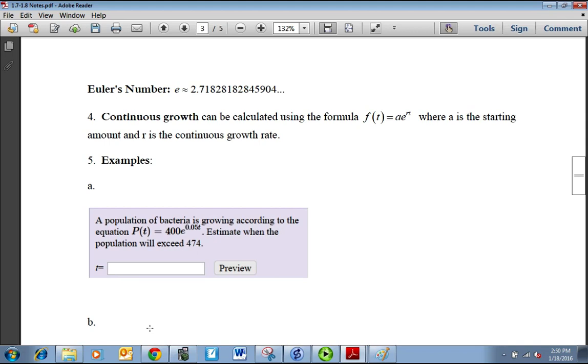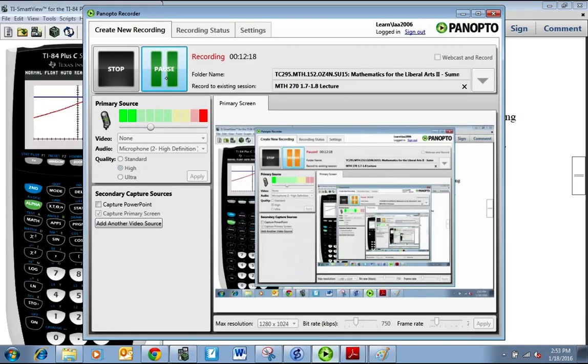In 5A, this problem says a population of bacteria is growing according to the equation P(t) = 400e^(0.05t). Estimate when the population will exceed 474. Setting it up, it would be 474 equals 400e^(0.05t). It wants to know when this population is going to be 474, so you're putting 474 in for P(t). Now you can use some algebra techniques to solve this, but we're going to go ahead and solve it with our calculator.